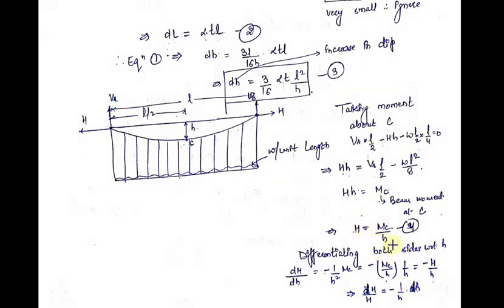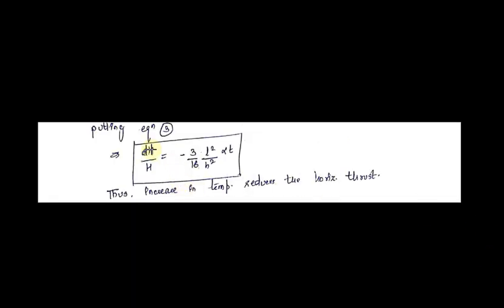After differentiating both sides with respect to small h, I get dH/dh equal to MC times (−1/h²), since MC is a constant. After rearranging, I get dH/H equal to −(1/h)·dh. We already know the value of small dh, so substituting it gives the final equation: dH/H equal to −(3/16)·(L²/h²)·alpha·T.